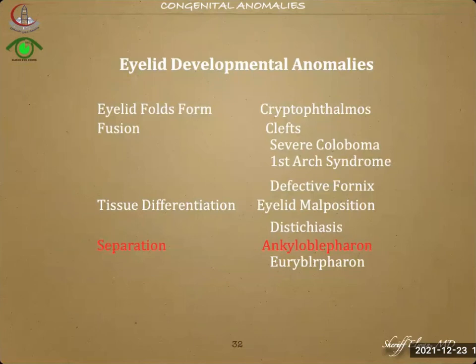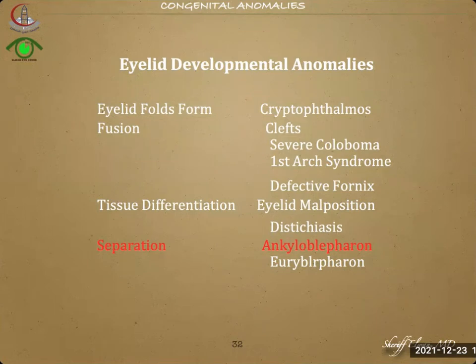Reviewing the schedule: we have finished eyelid fold malformation by describing cryptophthalmos; eyelid fold fusion malformations including clefts, severe coloboma, first arch syndrome, and defective fornices; and tissue differentiation abnormalities including eyelid malposition and distichiasis. We now describe separation abnormalities, which include ankyloblepharon and euryblepharon.